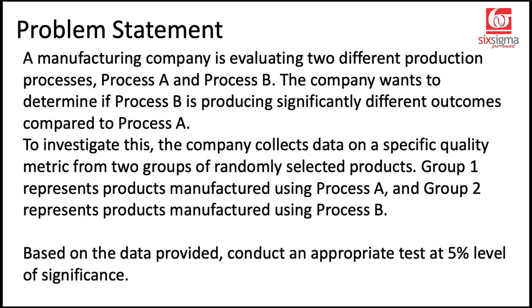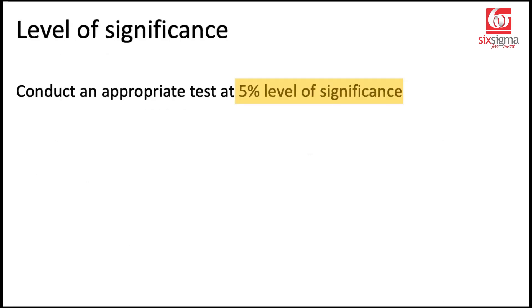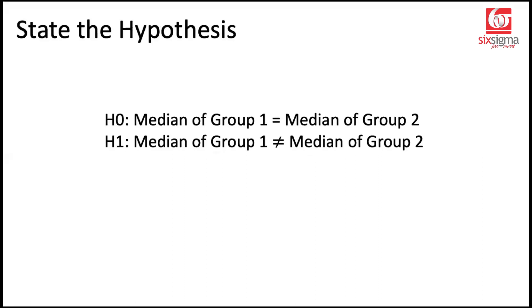The moment we finish stating this problem, we understand we are talking about two samples which have different origins. Process A has nothing to do with Process B. They are independent. The level of significance is 5%, which means the confidence is 95%, one minus alpha. Moving on to the hypothesis, the null hypothesis is that the median of group one equals the median of group two. The alternative hypothesis is that the medians are not the same, not equal. Whether they are greater or lesser is separate, but they're not the same.